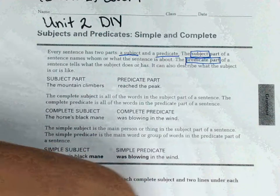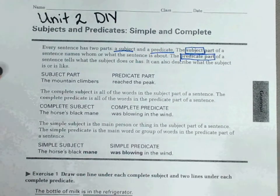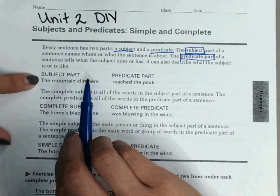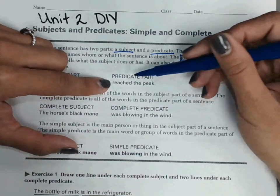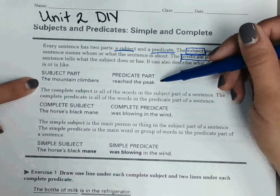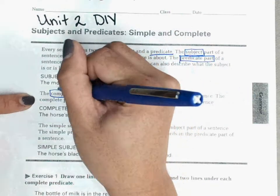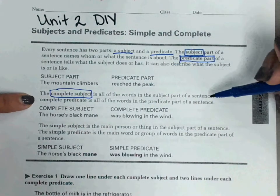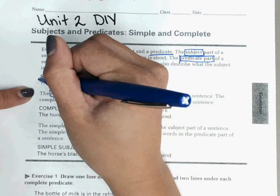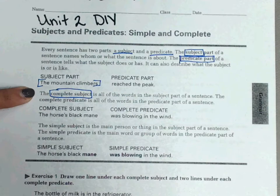For example, this first subject part is 'the mountain climbers.' The predicate part is what they did, which is 'reached the peak.' So our sentence reads: 'The mountain climbers reached the peak.' The complete subject is all of the words in the subject part of a sentence, so 'the mountain climbers' is the complete subject.